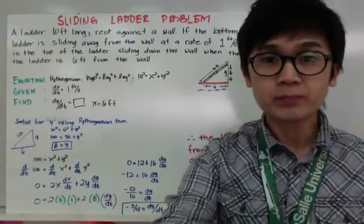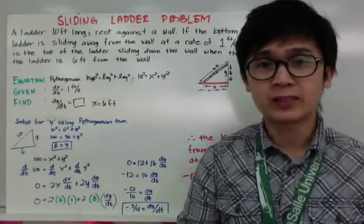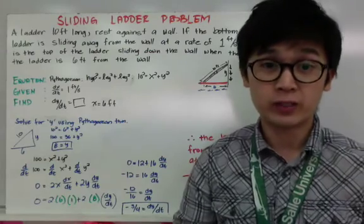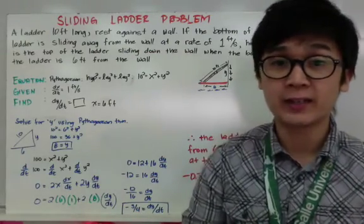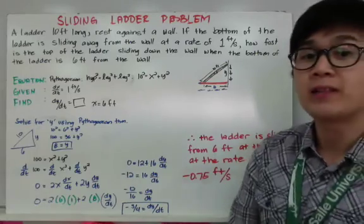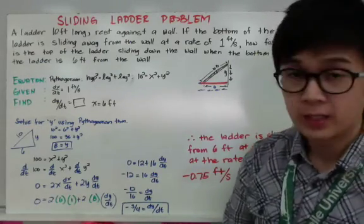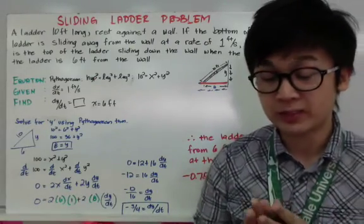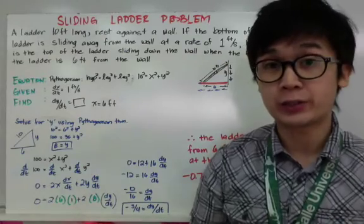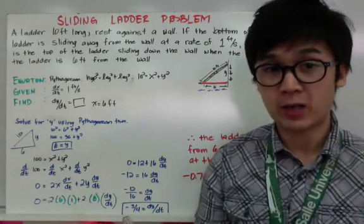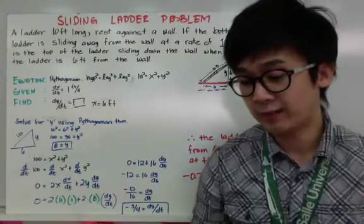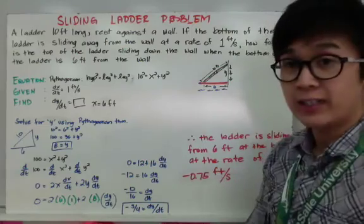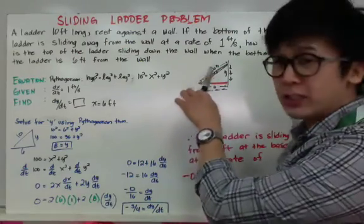In this word problem, a ladder 10 feet long rests against a vertical wall. If the bottom of the ladder slides away from the wall at a rate of 1 foot per second, how fast is the top of the ladder sliding down the wall when the bottom of the ladder is 6 feet from the wall? To simplify this problem, you need to draw the diagram. Since we are working with a ladder and wall, here's my wall and here's my ladder leaning against the wall — the ladder is 10 feet long.